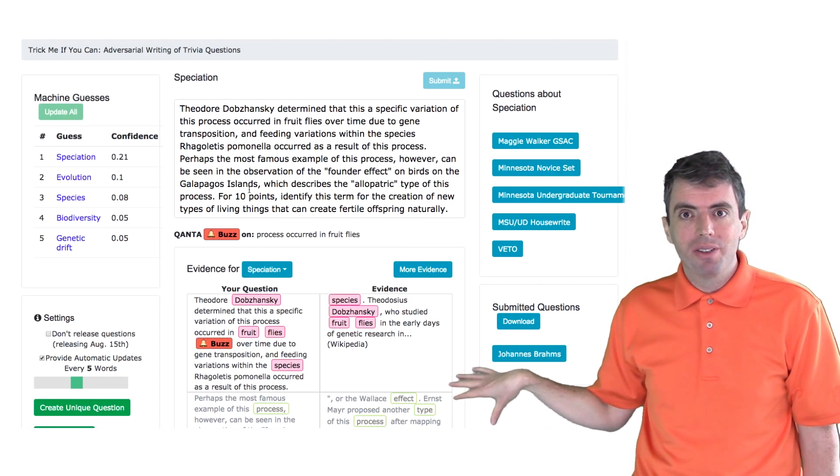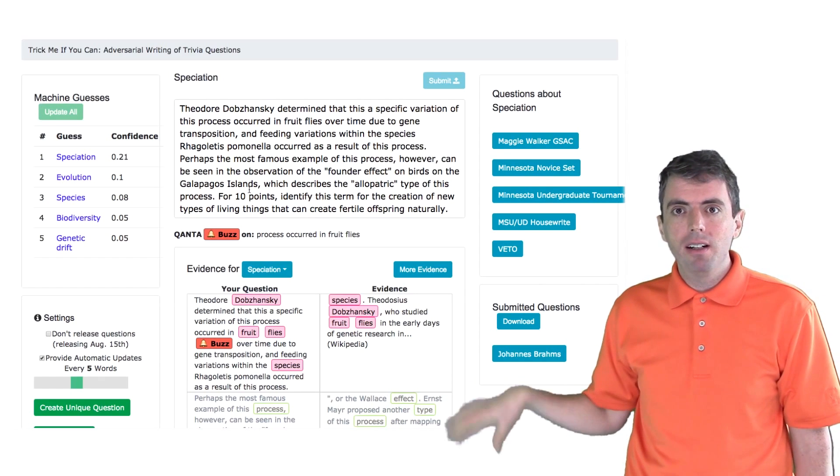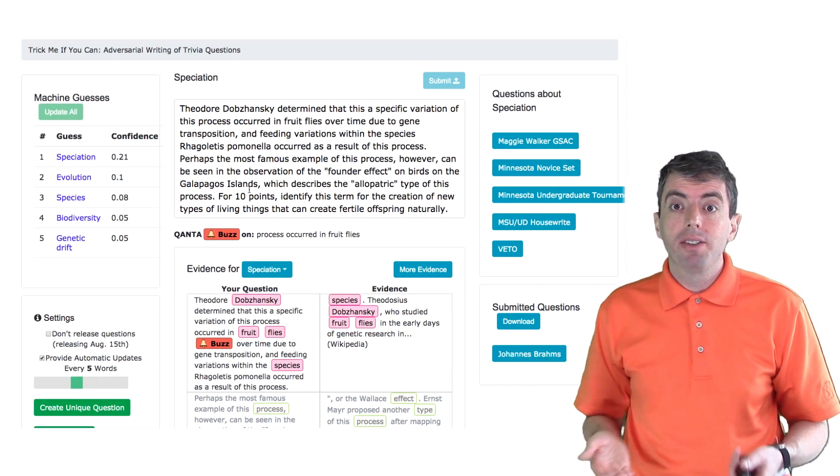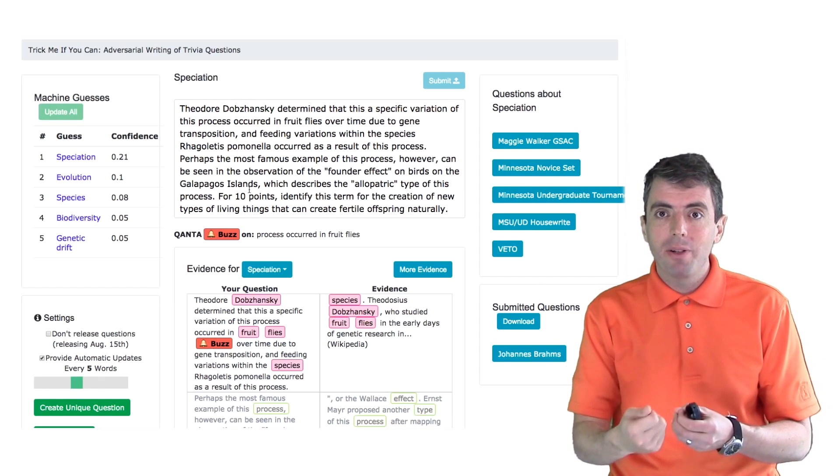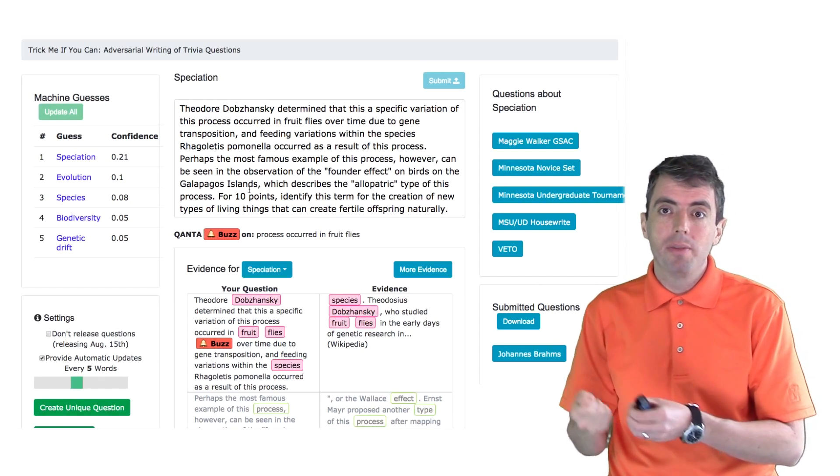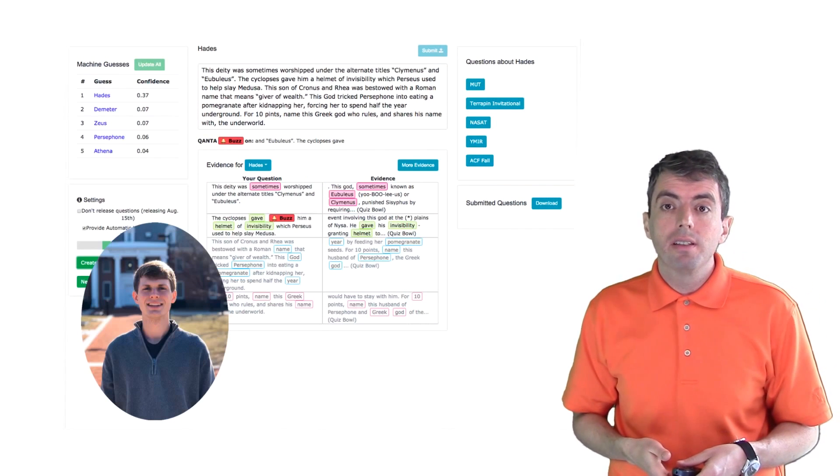Down in the bottom right corner, you can see all the questions you've submitted so far. As you get more practice, you may want to go back to your earlier questions and revise them as you learn new tricks to write questions that are pyramidal for both humans and computers.